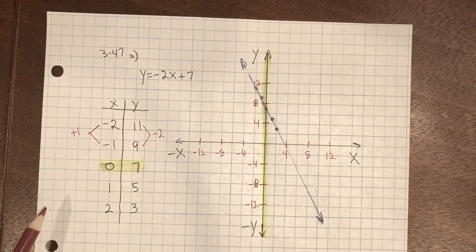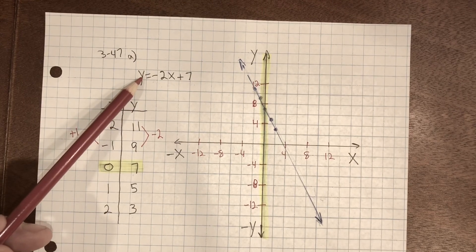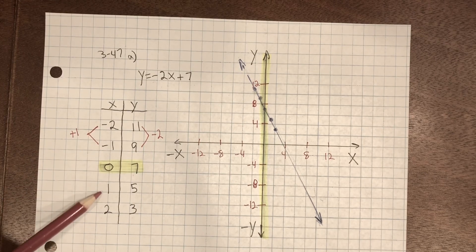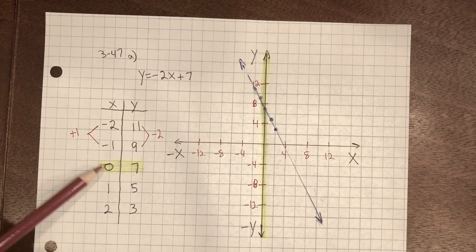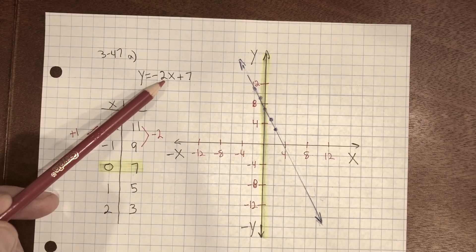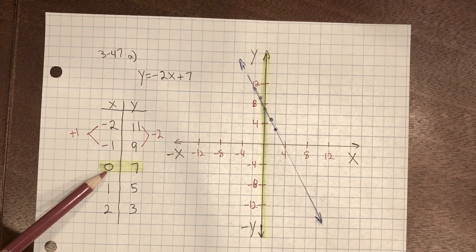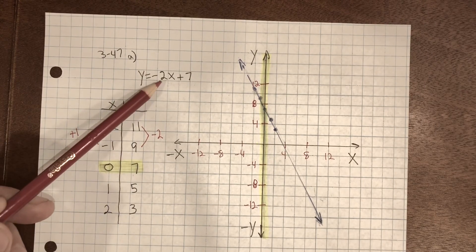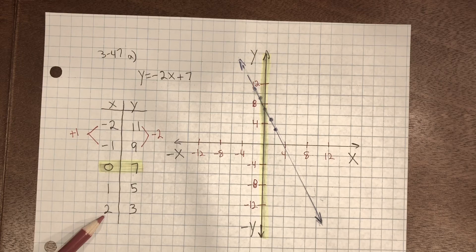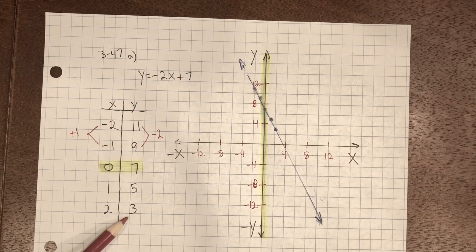For 347, A and B, I needed to create a table of x and y values for each given rule. I chose several negative values and positive values and zero. If I substitute negative two in for x, negative two multiplied by negative two is positive four plus seven equals 11. Zero for x: negative two multiplied by zero is zero plus seven equals seven. If x equals two, negative two multiplied by two is negative four plus seven equals positive three.